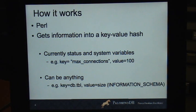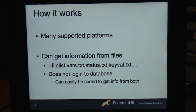So there are many supported platforms. It runs on Linux, it runs on Windows, runs on whatever. Anything you can run Perl on, it runs on Mac OS X. You can get information from files. So if you do a --filelist option, you can give it a file or one or more files. So you can have, let's say you have vars.txt or status.txt or keyval.txt. And if you do --filelist, it does not log into the database. So somebody at one point asked me, well, what if I want to give some from the database but some from files? So it can easily be extended to do that.